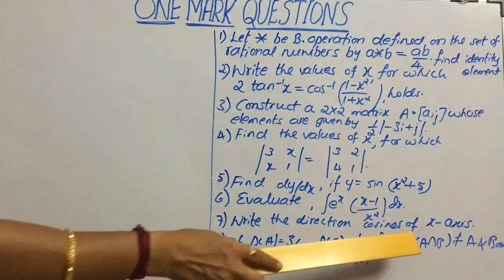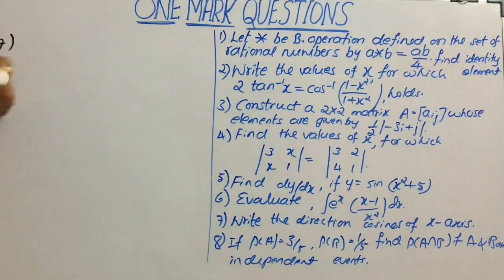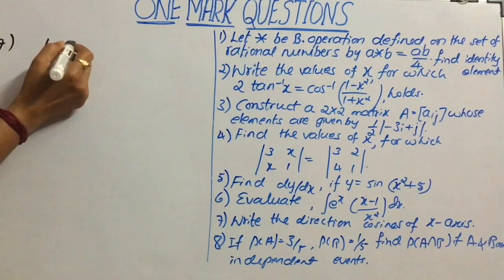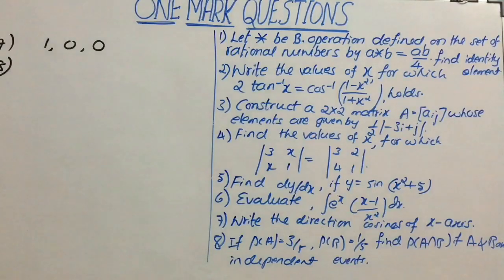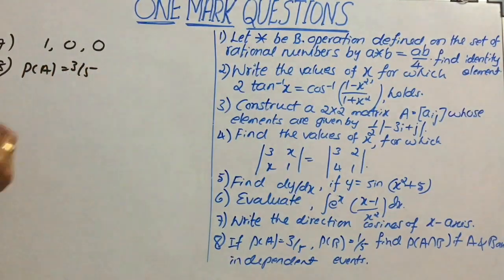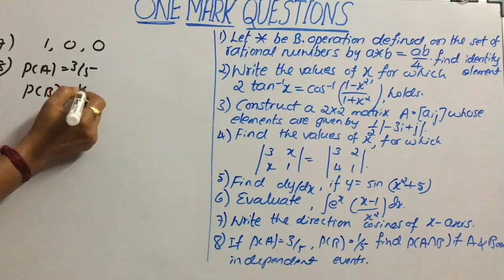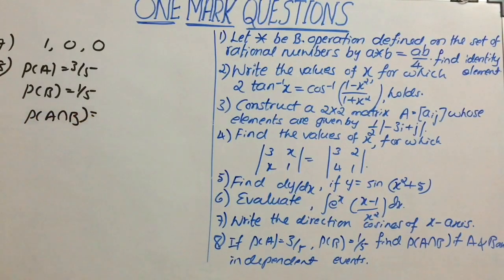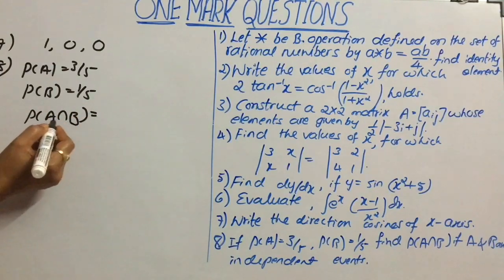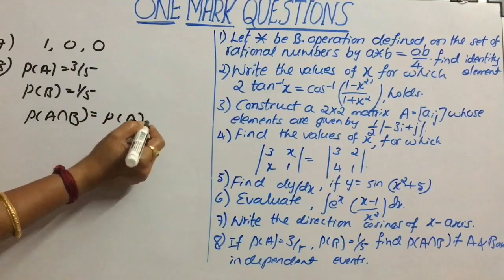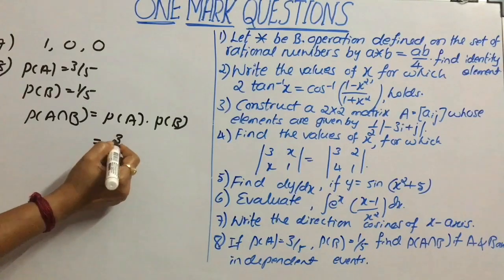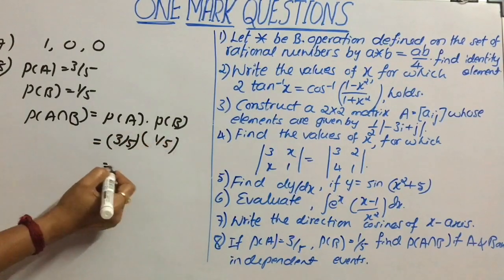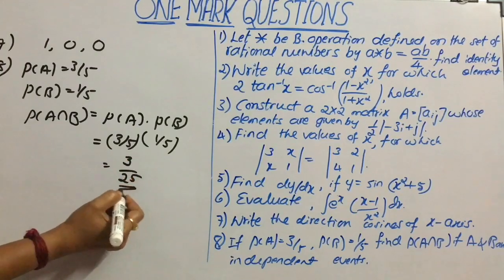Question 7: write the direction cosines of the x-axis. The direction cosines of the x-axis are 1, 0, 0. Question 8: if P of A is 3 by 5 and P of B is 1 by 5, find P of A intersection B. Since A and B are independent events, probability of A intersection B equals probability of A into probability of B, that is 3 by 5 into 1 by 5, which gives 3 by 25. Thank you.